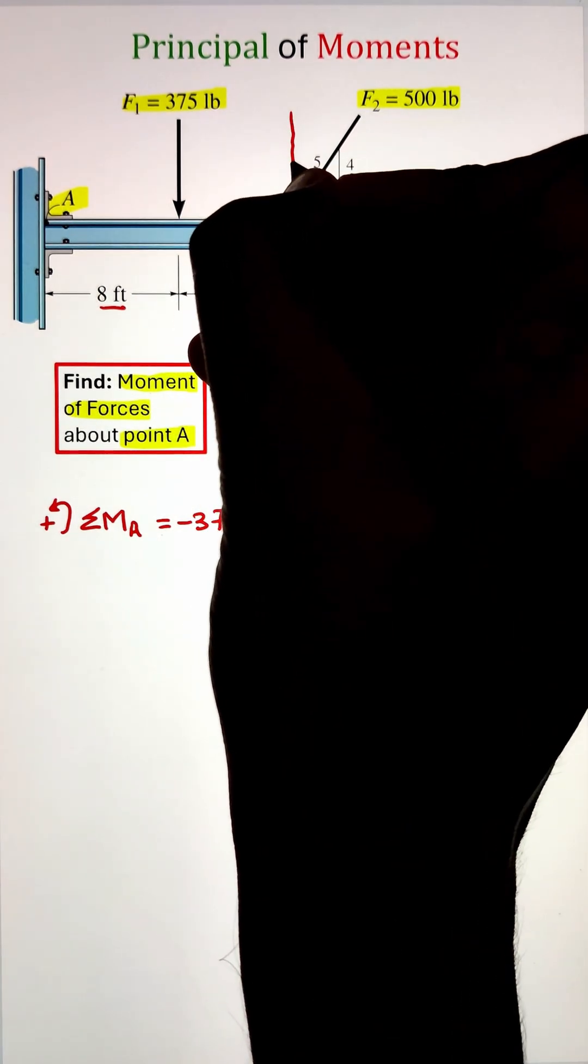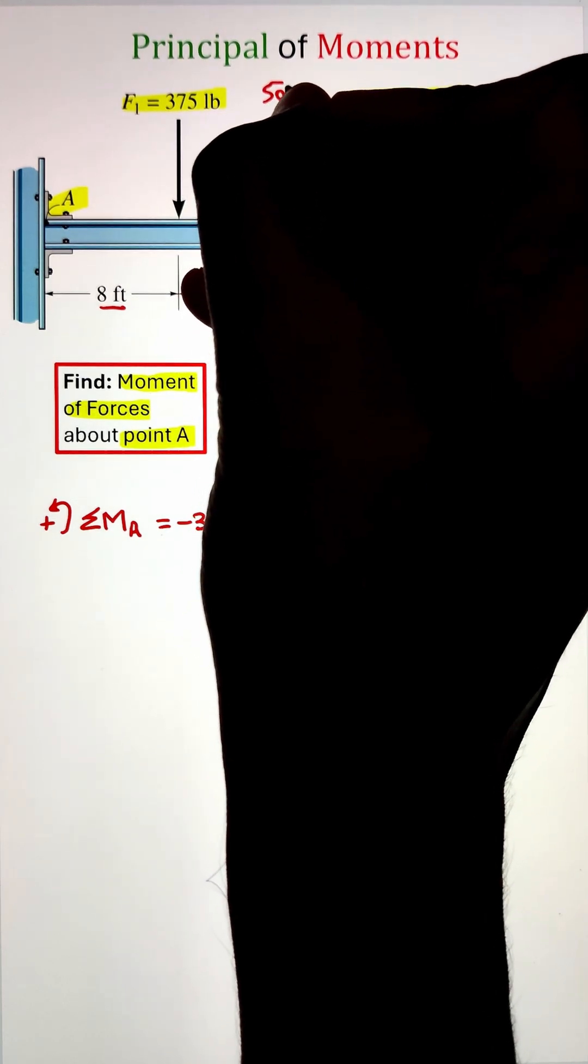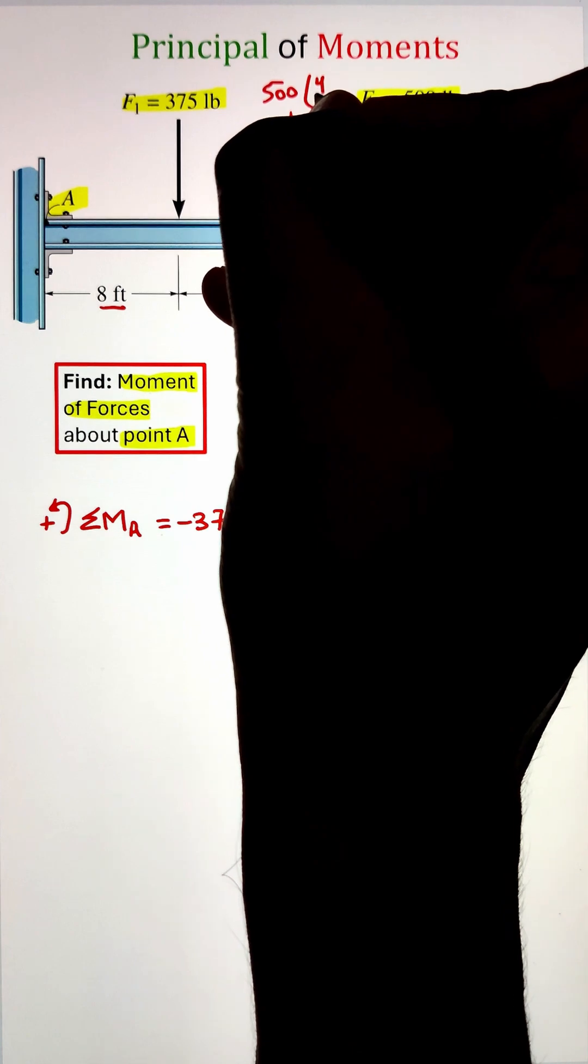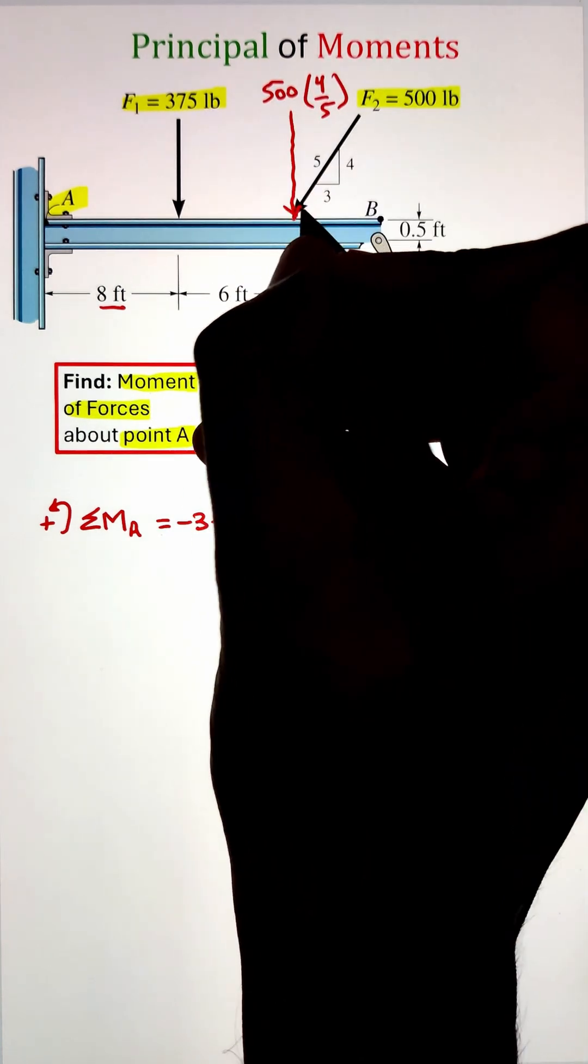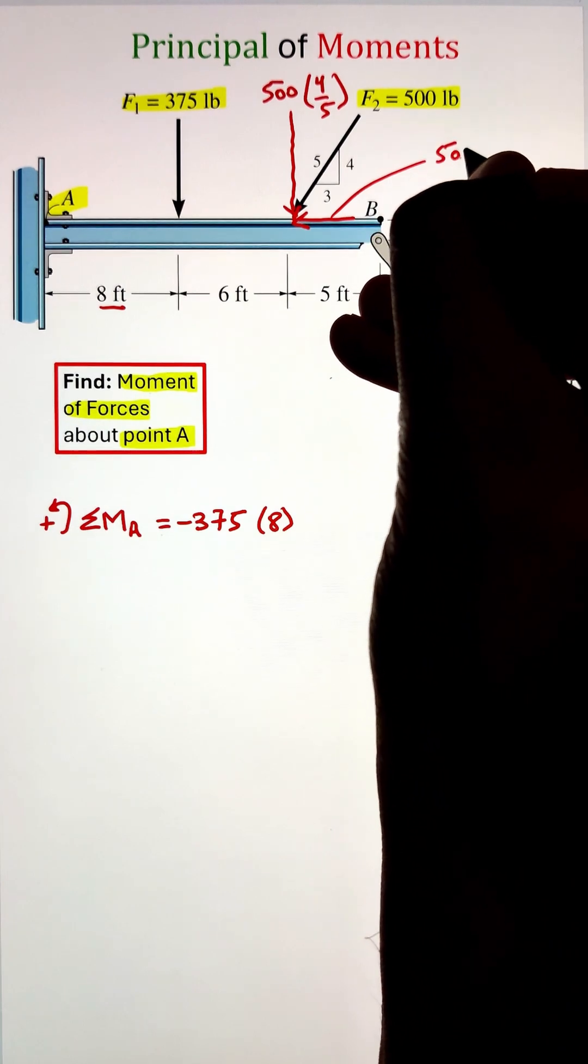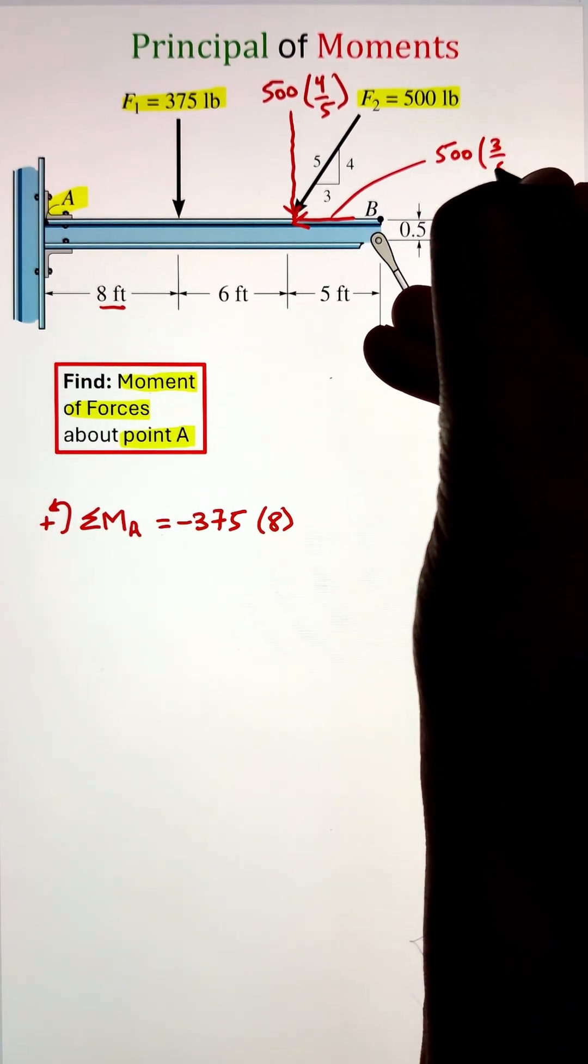Next, let's look at force F2 that is acting at an angle. We can resolve it into its vertical and horizontal components by utilizing the information in the right triangle. In this case, the hypotenuse is given as 5, whereas the opposite is 4. Multiplying 500 with 4 over 5 will project it along the vertical axis.